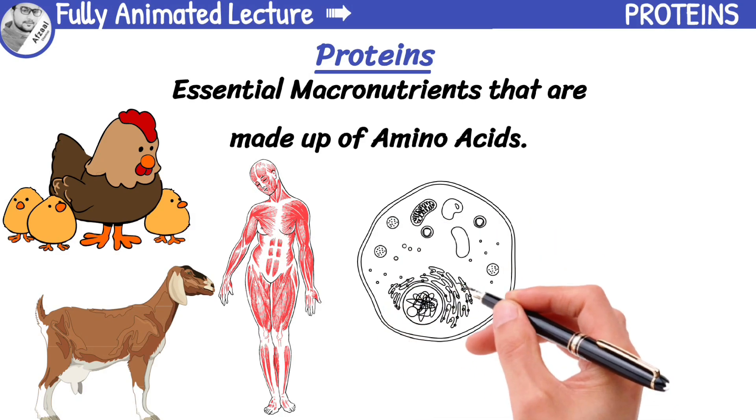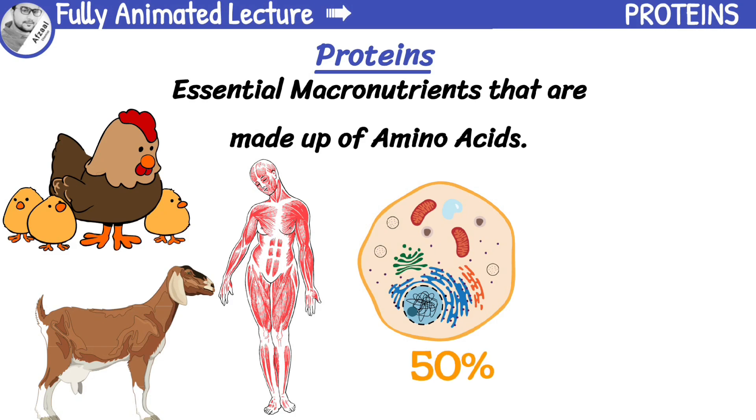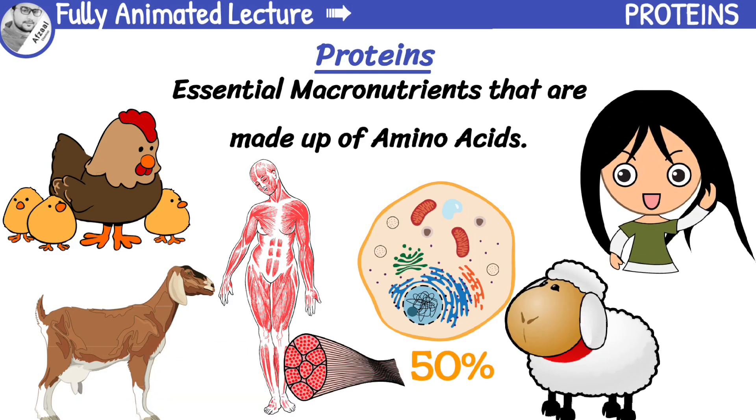About 50% of the dry weight of cells is made up of proteins. Protein is also found in muscles, hair and wool.